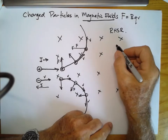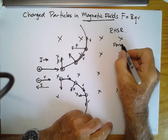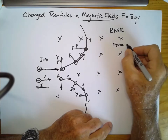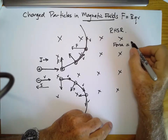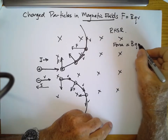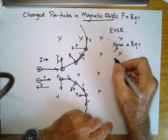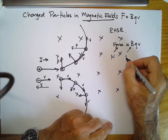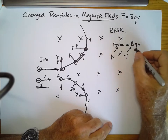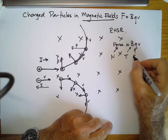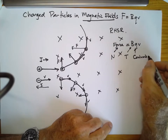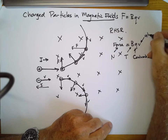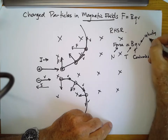The force on a charged particle in a magnetic field is given by F = BQV. Force is measured in Newtons, magnetic field strength B in Tesla, charge Q in Coulombs, and velocity v in meters per second.